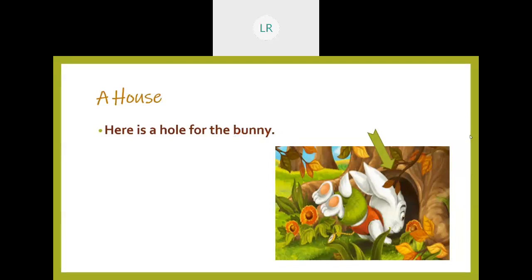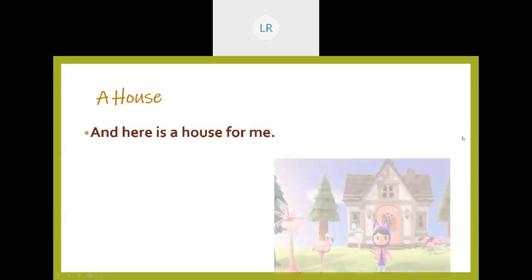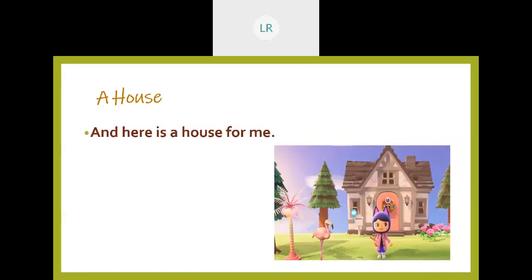Shall we move to the next one? What do you see in this picture? You can see a little girl standing in front of the house. Which is the house for that little girl? House is a house for that little girl. The poet is telling: 'And here is a house for me.' Here is a house for me. What is the spelling for house? H-O-U-S-E. Good.